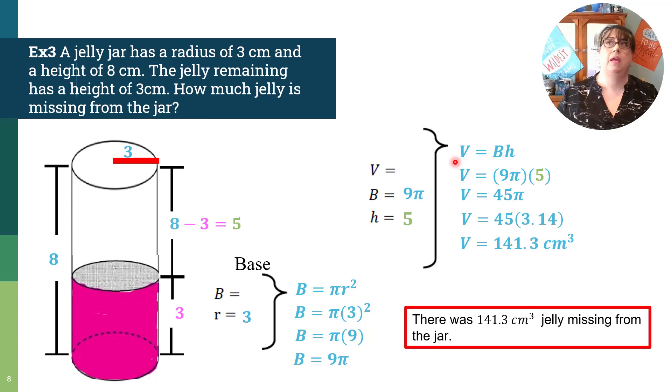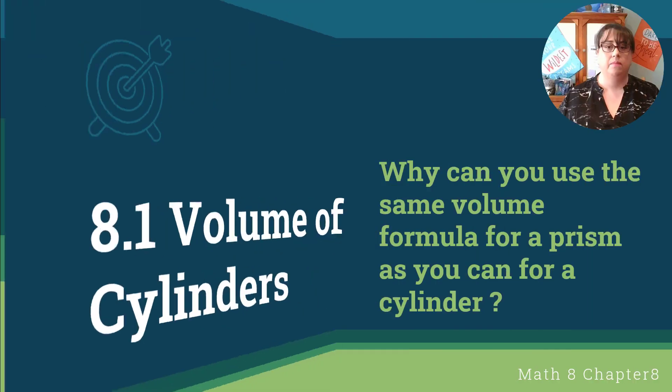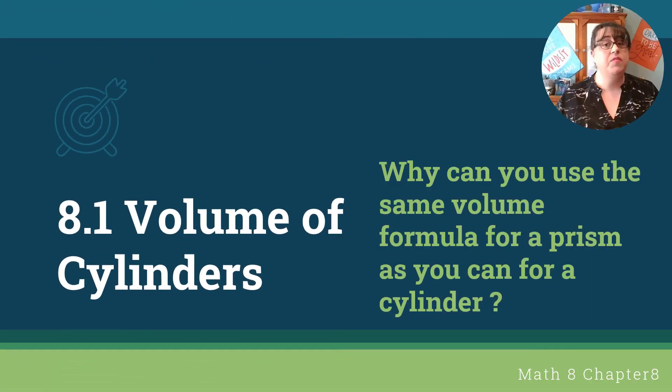So something that looked like it was going to be like one of those, oh my gosh, I don't even know how to start this problem. If we take our time to go through and highlight and dissect each part of it, we actually know much more about the problem. Now that we've done a bunch of these problems, I want you to think about this. Last question. Why can you use the same volume for a prism as you can for a cylinder? If you can, even explain that to somebody.